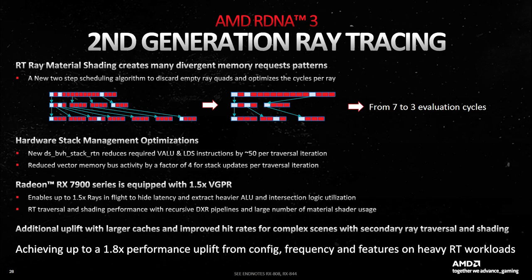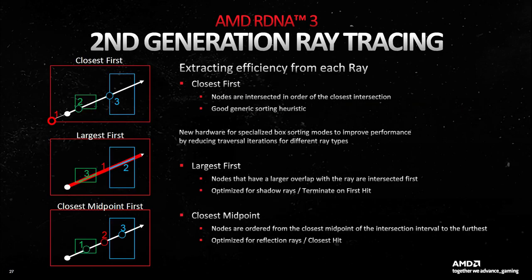AMD are calling this the second generation of ray tracing, with new hardware and specialized box sorting modes — closest node first or largest first — to improve performance by reducing traversal iterations for different ray types. AMD also allows the discarding of empty ray quads, optimizing cycles per ray. According to AMD's own data, the larger caches, improved architecture, and other tweaks allow up to an 80% increase over RDNA 2 in ray tracing. Without independent testing, and purely as a guess, I suspect performance will improve further over time as developer tweaks and optimizations creep into game engines. That said, I think NVIDIA will probably maintain the ray tracing advantage going forward.